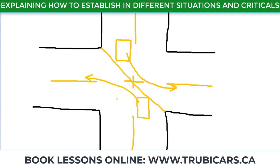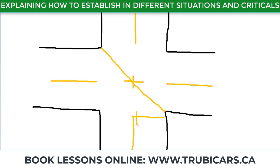Now let me show you the common critical errors when people establish, because a lot of times they think they have established properly but in reality they have not. The first critical error is not going far enough in the intersection. Sometimes students just stop a little bit in — only just past the stop line — and sit there. You have to claim the intersection. If the light is green and you're the first car, you have to go a little bit more into the intersection to claim it. If you're just sitting right at the edge, you're still pretty much behind the intersection — that's a critical error.